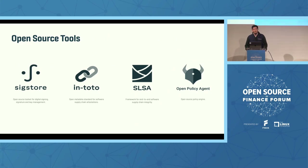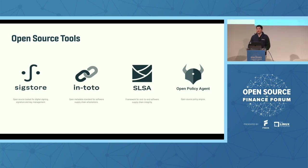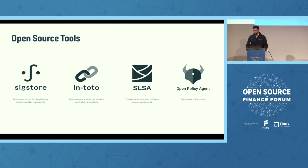There are a lot of open source tools that can help in this process. Some of the most important ones are Sigstore, which is a digital signing tool. Also in-toto and SLSA, which provide the ability to prove the authenticity of the artifacts you're capturing as well as the environment they were captured in. And then Open Policy Agent for writing your rule sets to determine what the definition of passing and failing are.